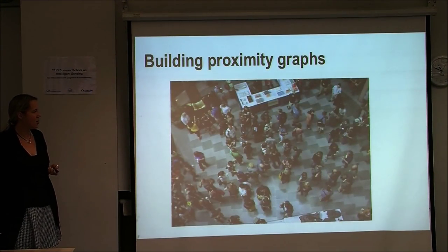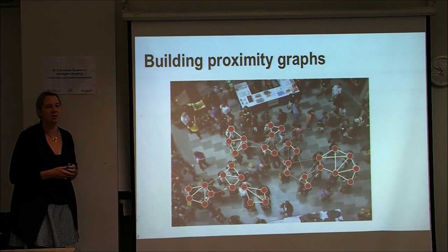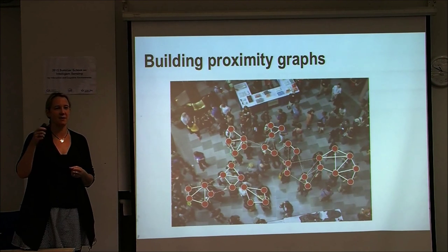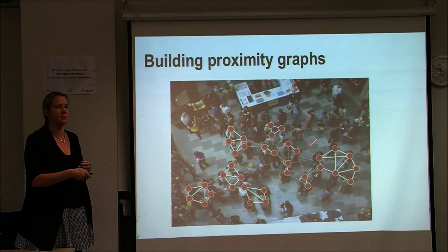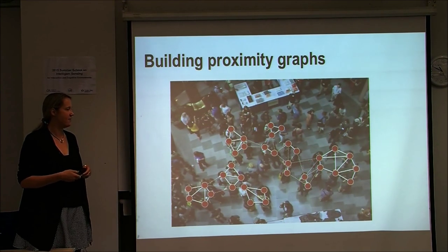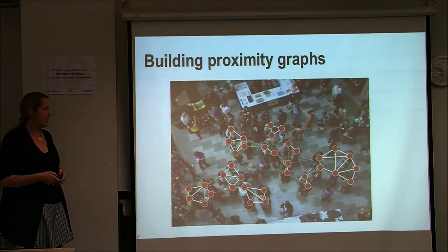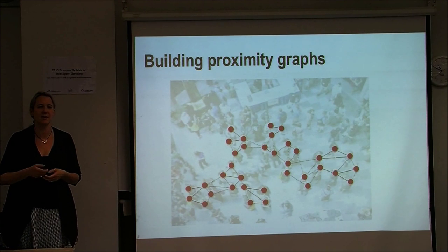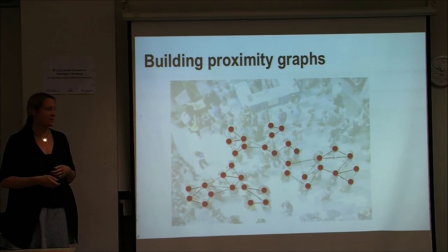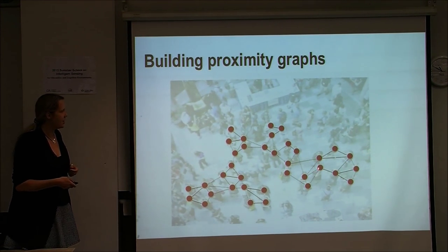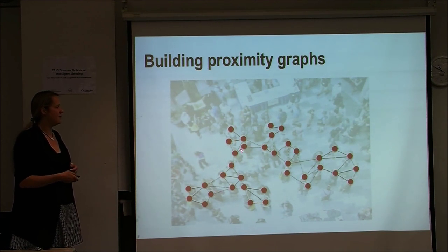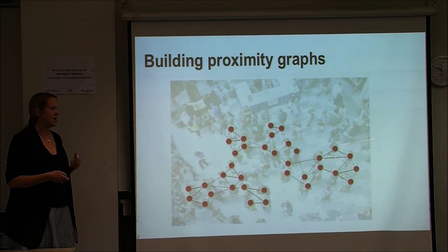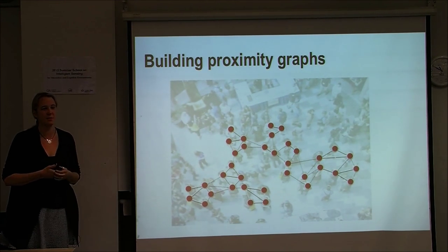Our approach involves building proximity graphs — representing how far each person is from others and how often they interact — and then looking at movements over time using temporal graphs to identify clusters of individuals who consistently move together. An important caveat is that these graphs are context-dependent: a proximity graph from an exposition may look similar to one from a train station but have very different underlying movement characteristics.